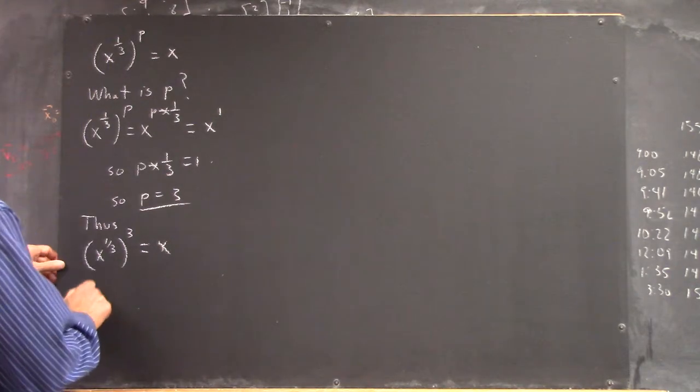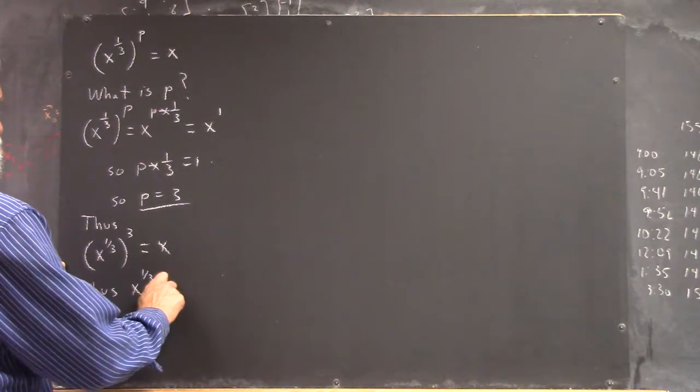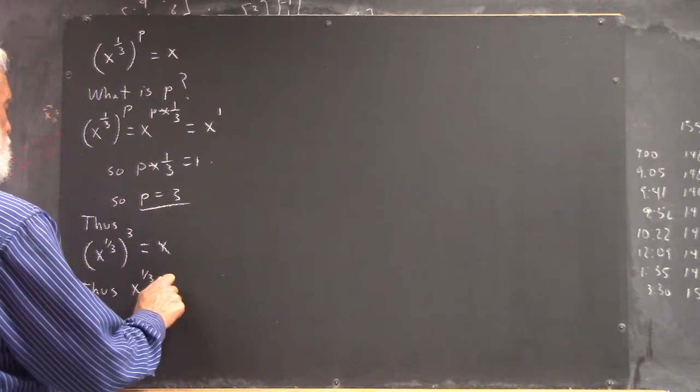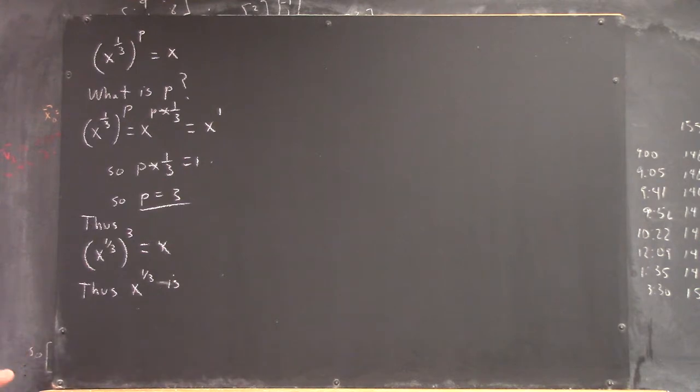And we then say, what is x to the 1/3? Okay, consider the number 8. Now, 8 to the 1/3 has to be the number you multiply by itself 3 times to get 8, right?